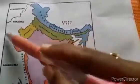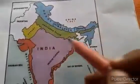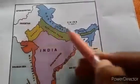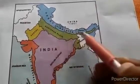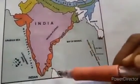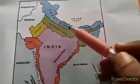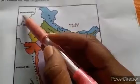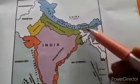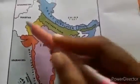Many neighboring countries are around us. Can you see them on this map? Their names are: Afghanistan, Pakistan, China, Nepal, Bhutan, Bangladesh, Myanmar, and finally Sri Lanka. These are our neighboring countries.